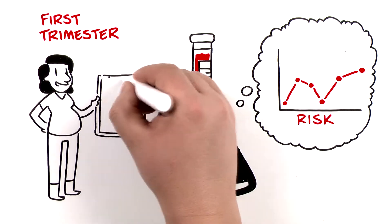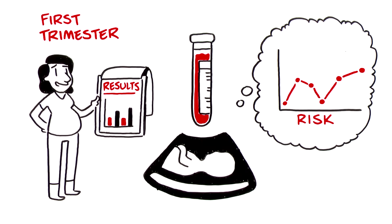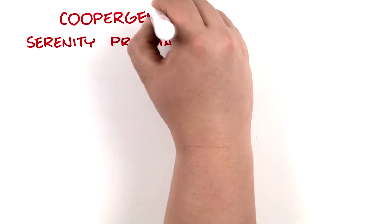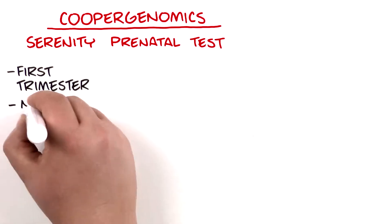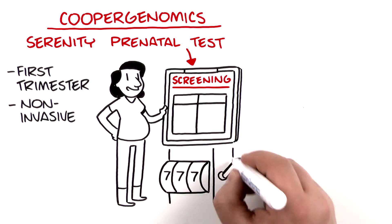The Serenity Prenatal Test from Cooper Genomics is a first trimester non-invasive prenatal screening test that does more than just calculate chance.